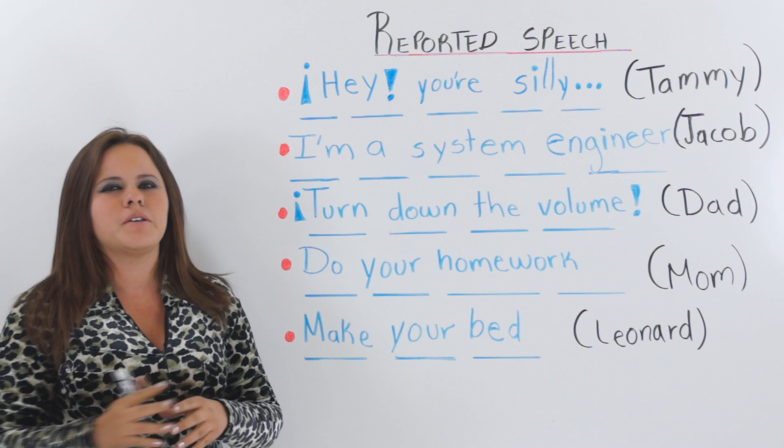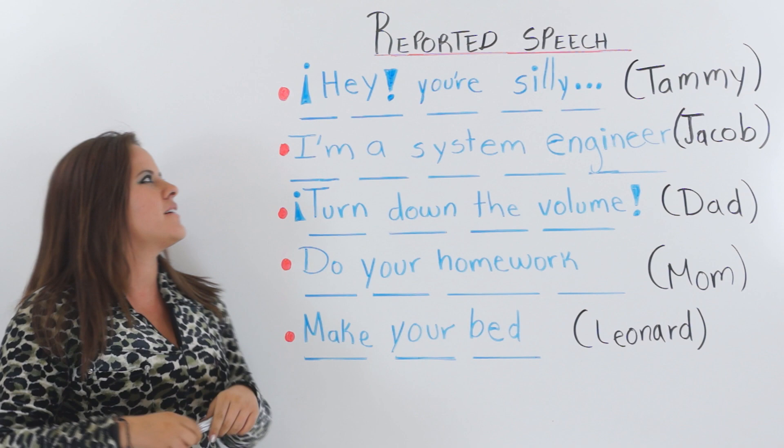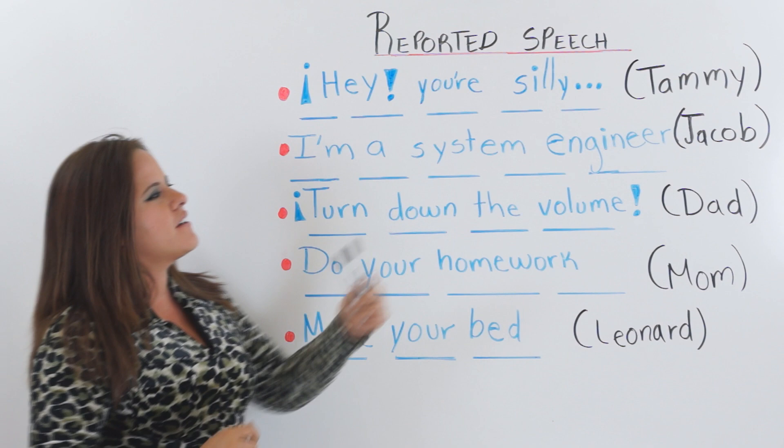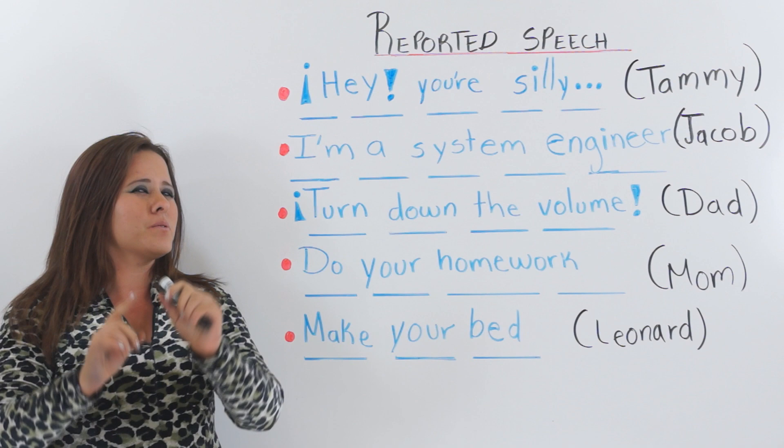Now we're gonna practice a little bit. Here are some exercises so you can get it clearly. The first one says: 'Hey, you're silly.' The one who's speaking is Tammy, which is a girl. How would you turn that into reported speech? I'm gonna give you ten seconds to think about it.